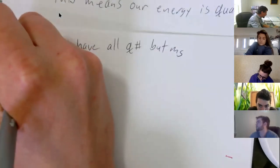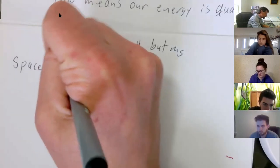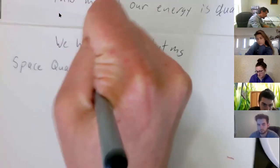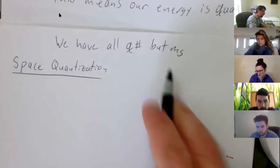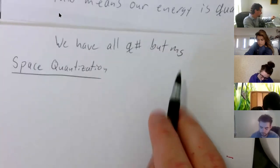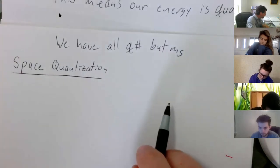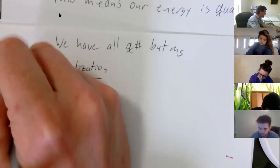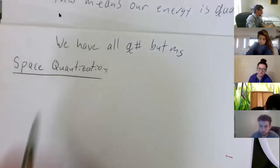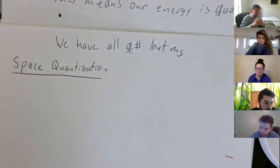Let's find M_S by first talking about space quantization. We said that for a given value of L, there are only so many values of M_L that we can have.